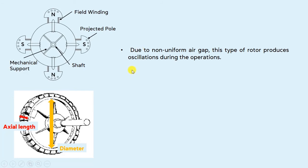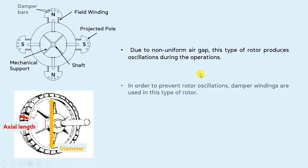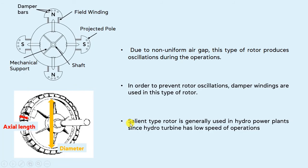Moving forward, due to the non-uniform air gap, this type of rotor produces oscillations during operation. In order to prevent rotor oscillations, damper windings are used. Here you can see damper bars have been provided in the outer poles of the salient type rotor to prevent rotor oscillations. Salient type rotor is generally used in hydro power plants since hydro turbines have a low speed of operation, and as we know, salient type rotors are only used in medium and low speed machines.